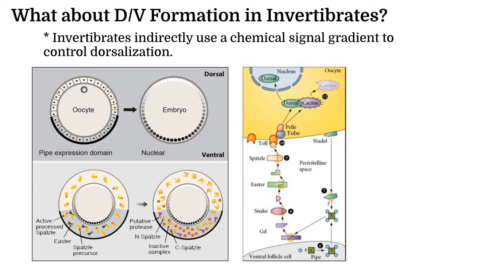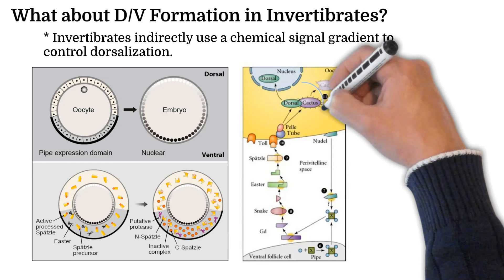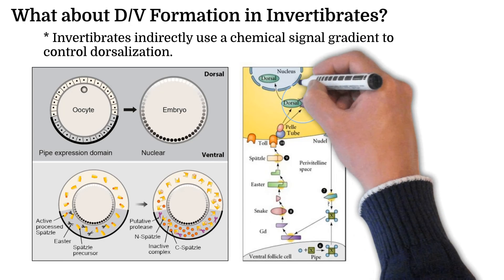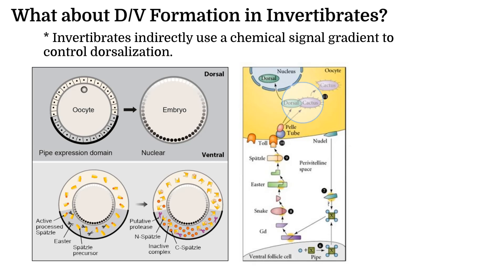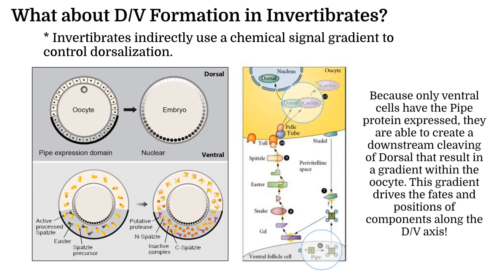However, it cannot even do so without it first being cleaved from a protein called cactus by another protein called toll. Only ventral cells in the oocyte have the material necessary to induce toll's ability to cleave dorsal from cactus, and that is because they have a protein called pipe that initiates this downstream process. As a result of all this, dorsal gets cleaved exclusively on the ventral side of the oocyte, forming a gradient of the protein within the cytoplasm that helps to specify the fates of ventral developmental components.